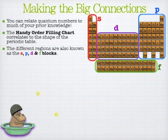As you go through the handy order of filling chart, you never go above F. But as you go through, you'll see 1s, 2s, 2p, 3s, 3p, 4s.